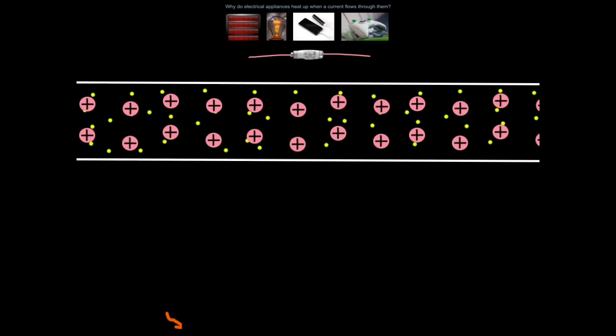So when describing resistance or the cause of, these are the two particles we need to think about: electrons (these little yellow dots) and positively charged ions (these pink circles).